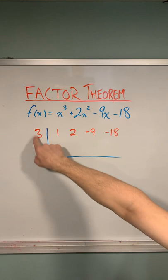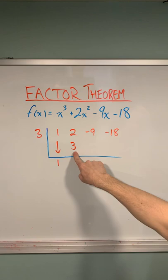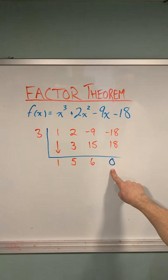We bring the first coefficient down, multiply by this value, and write the result here. We add this column straight down and then repeat the process as many times as you have to to get your remainder of zero. And you should get zero here because remember x minus 3 was a factor.